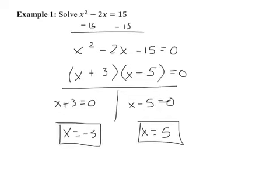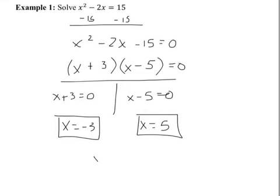In solution set form, you write it like this: x equals, then braces, negative three, comma, five. This is not a coordinate — the braces indicate that it is not a coordinate. Traditionally you write from lower to higher number, but it doesn't really matter. If you wrote five and then negative three, it's the same answer. Any questions on the first example?